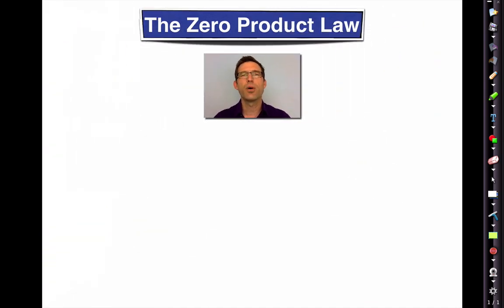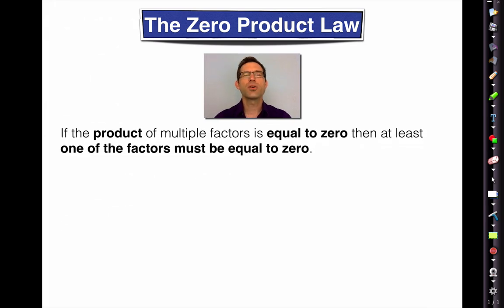The Zero Product Law. Know everything about this law, including its name. The Zero Product Law states that if the product of multiple factors is equal to zero, then at least one of those factors must be equal to zero. I want you to think about this.